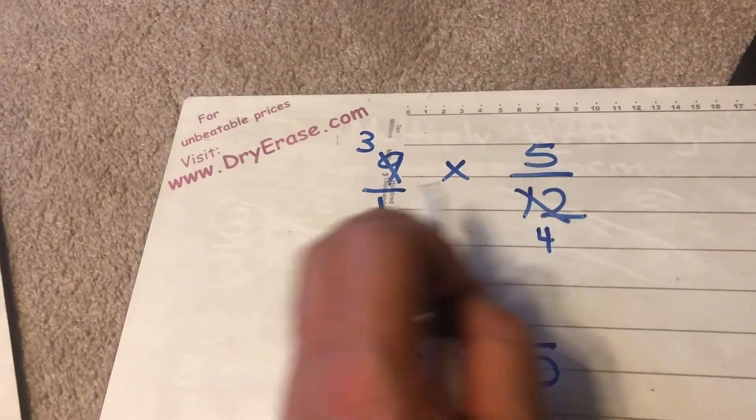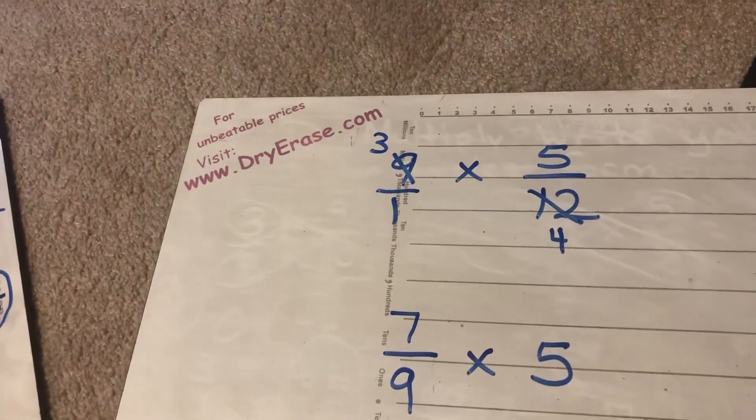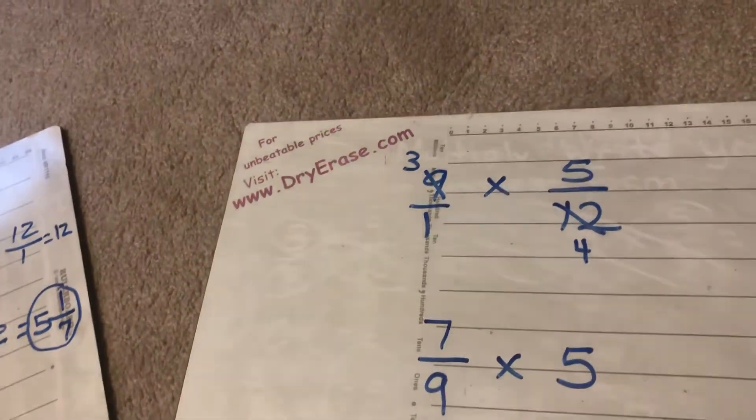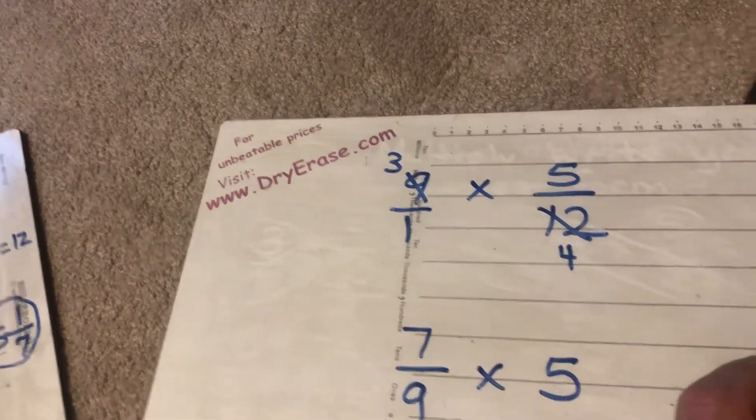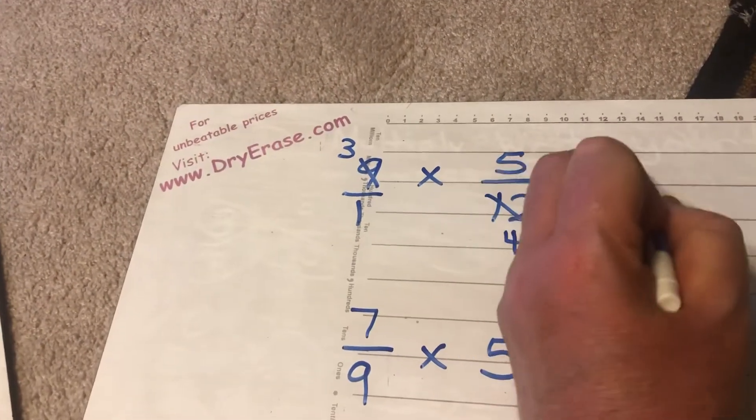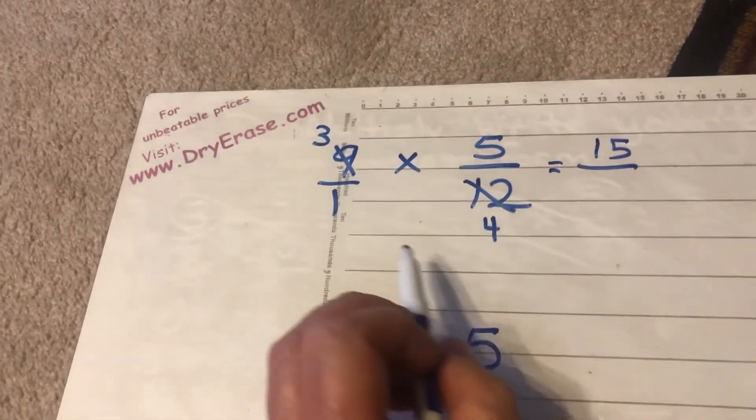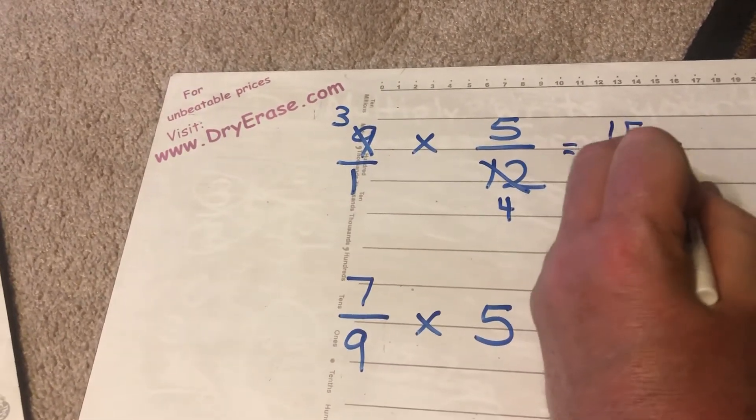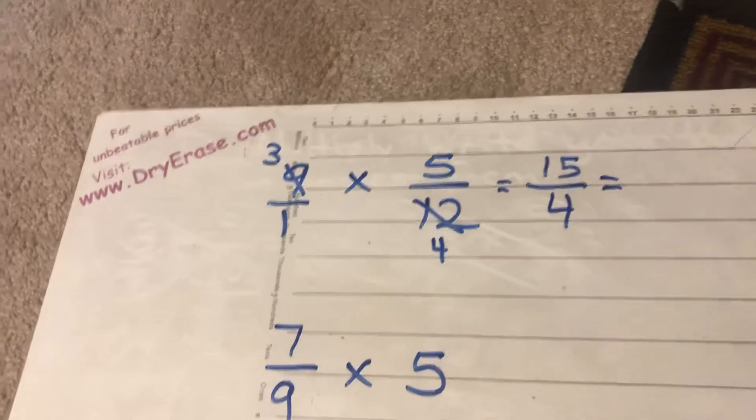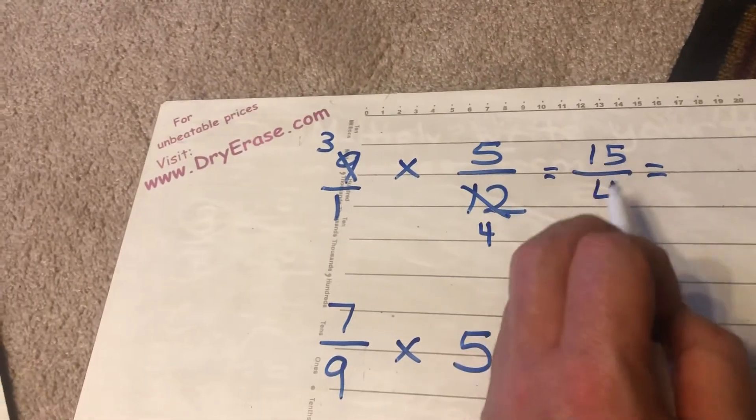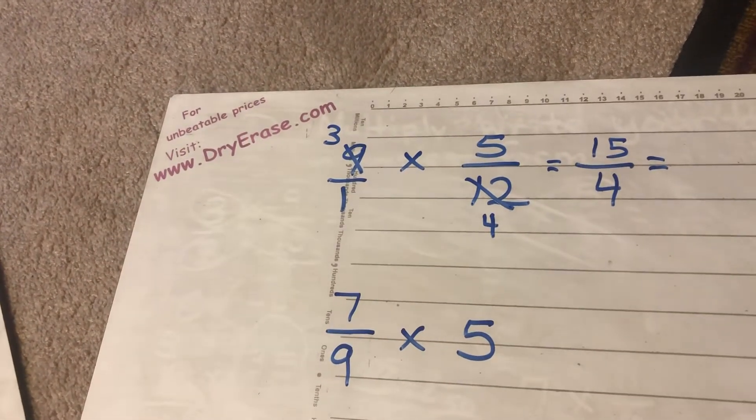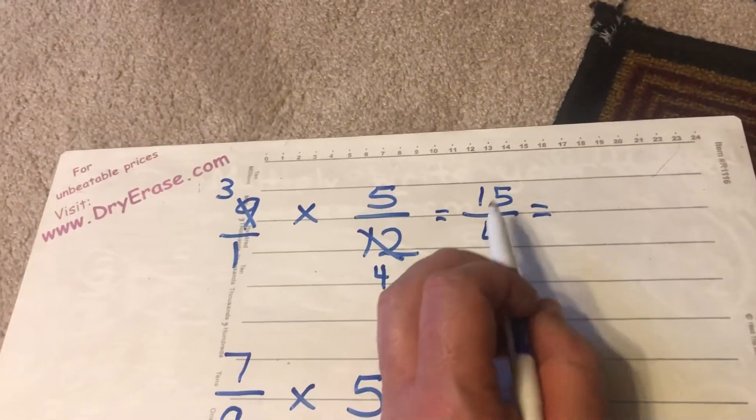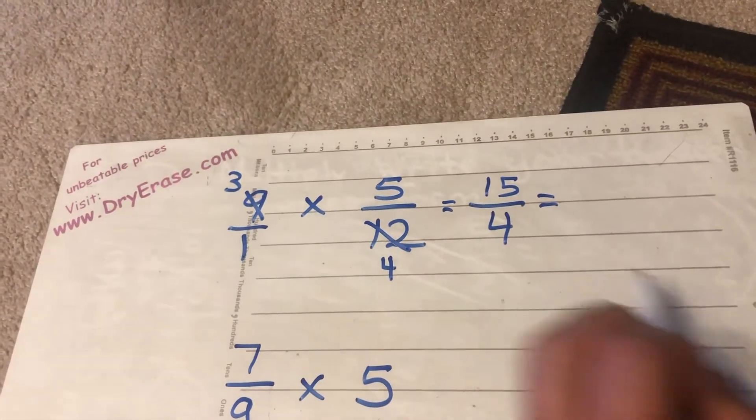Nothing besides 1 can go into both 1 and 5 so that's as low as it's going to be. Nothing besides 1 can go into both 3 and 4 so those can't go any lower. So I'm thinking well 3 times 5. 3 times 5 is 15. Then I'm going to do 1 times 4. Well 1 times 4 is 4. Well I know that 15 over 4 is in simplest form but since the numerator 15 is bigger than the denominator 4 I have to actually do 15 divided by 4.